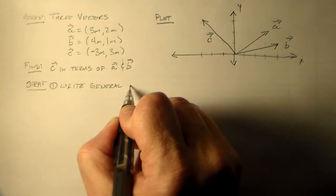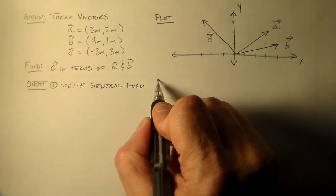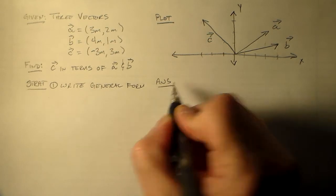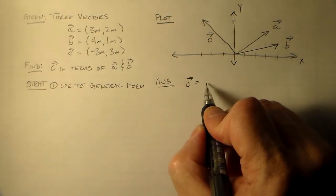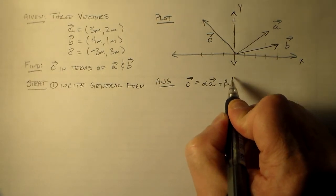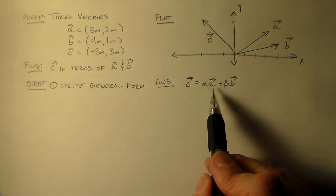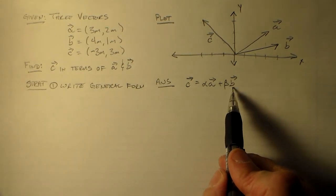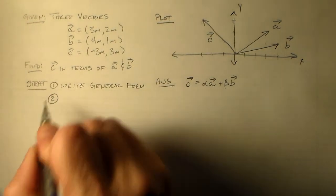So the way I like to approach these problems is to write them in general form. So there's just a general form of saying this, right? And that general form is C is equal to a constant times A, a scalar constant times A, plus a scalar constant times B. I like to be creative, so I've used alpha and I've matched that up with A and beta with B. Who would have thought of that?